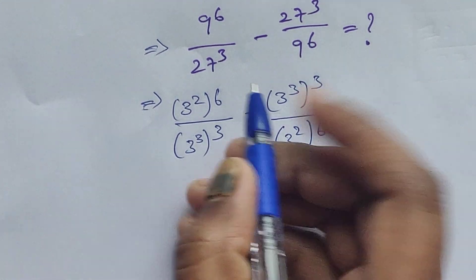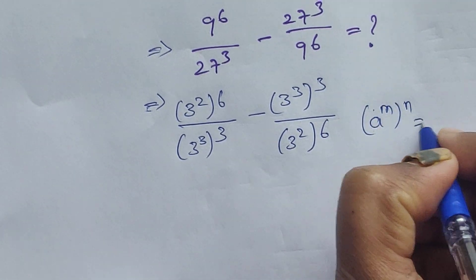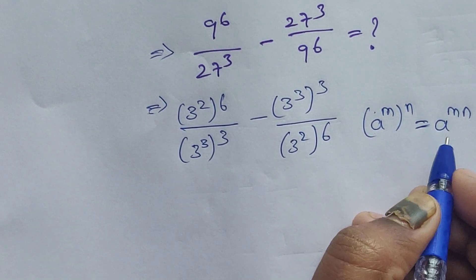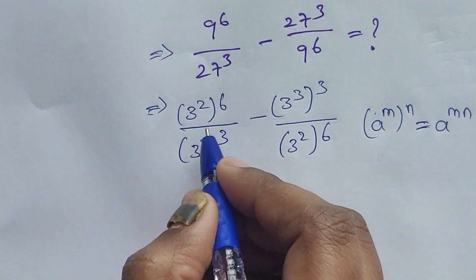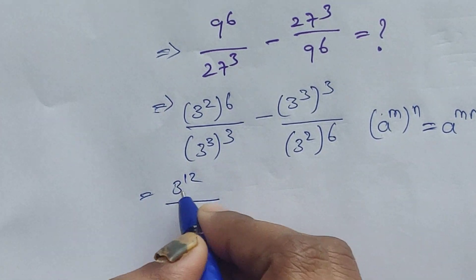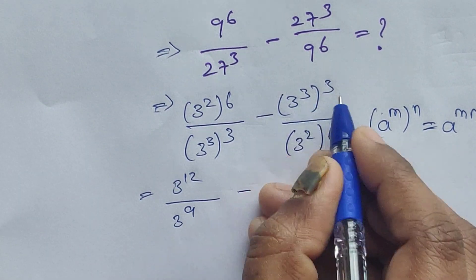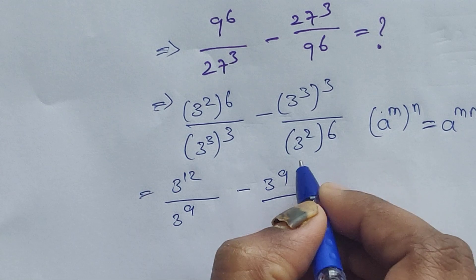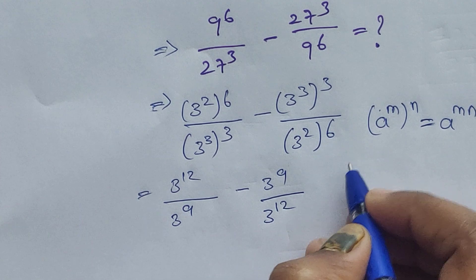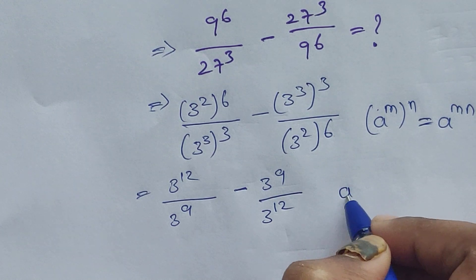The formula is: (a^m)^n = a^(m×n). Applying this: 2 times 6 is 12, so we get 3^12. And 3 times 3 is 9, so we get 3^9. So the expression becomes 3^12 / 3^9 minus 3^9 / 3^12.